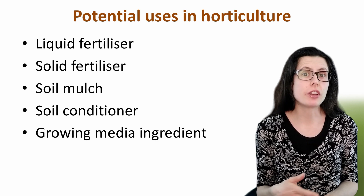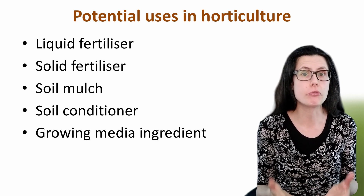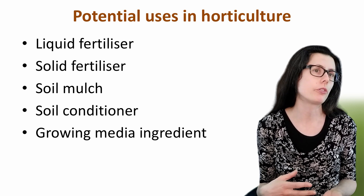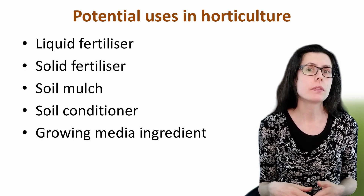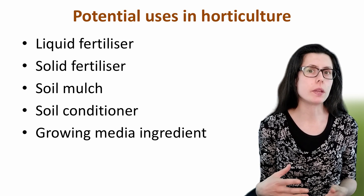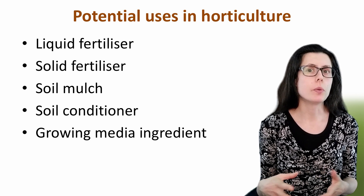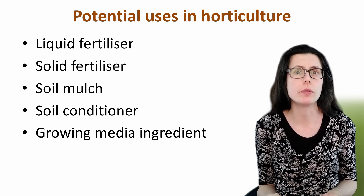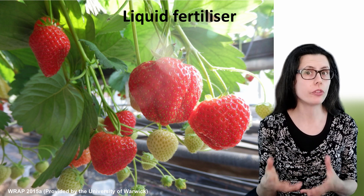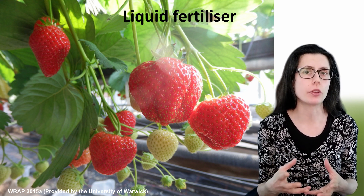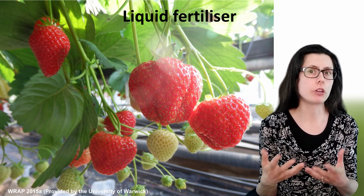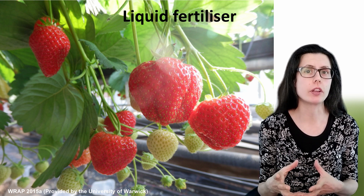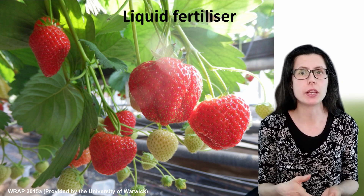We already know that digestates are used successfully to feed agricultural crops and improve soils. As an extension of this, could digestates be used in horticulture as fertiliser, soil mulch, soil conditioner, or as a growing media ingredient? Over the last decade, there has been a lot of research to address this question. One option is to use the whole or separated liquor fraction as a fertiliser for soil or peat-based growing systems, such as to grow strawberries or tomatoes. In the UK, there are at least two digestate-based liquid fertilisers, called biofertilisers, on the market specifically for gardeners.